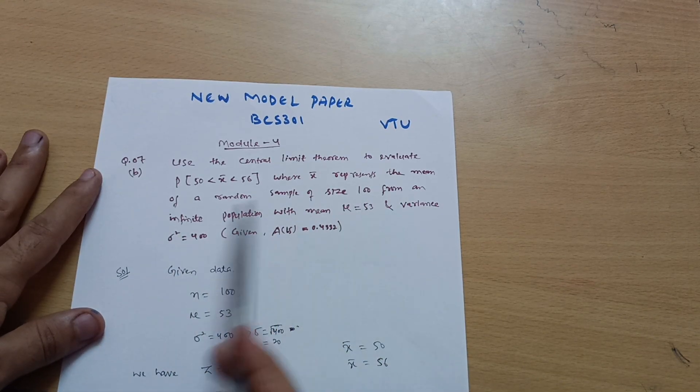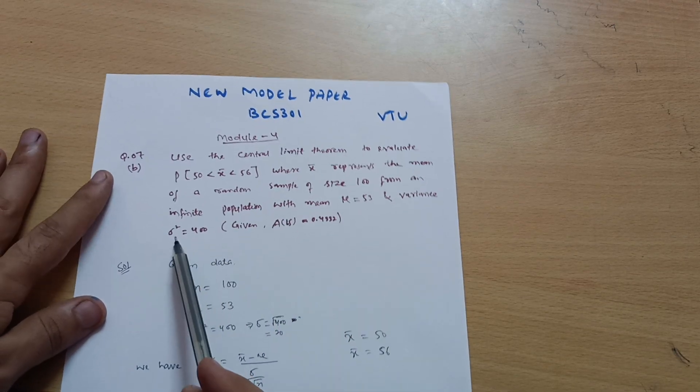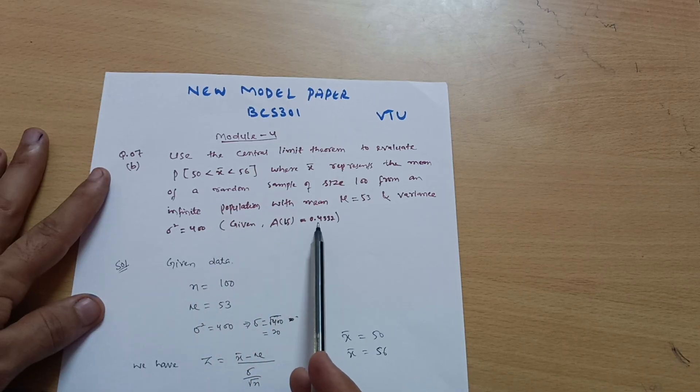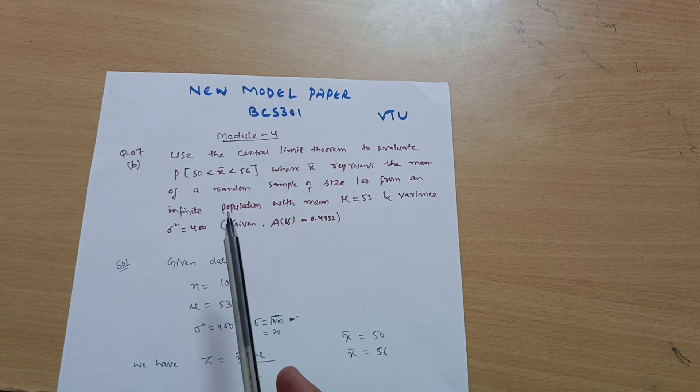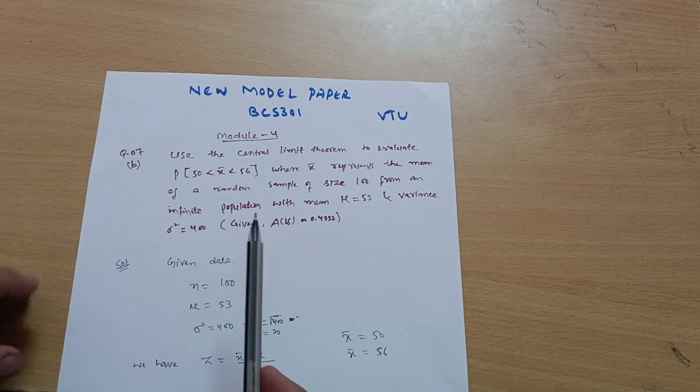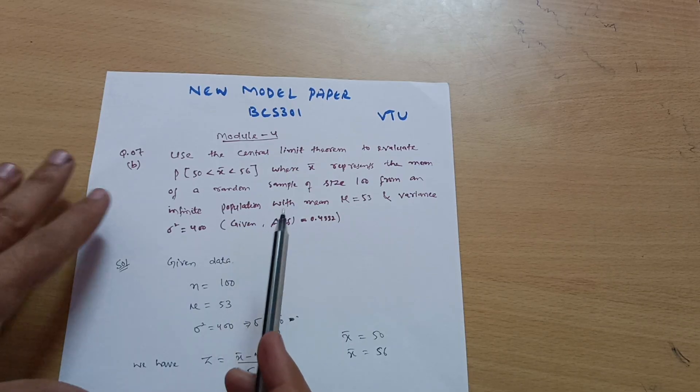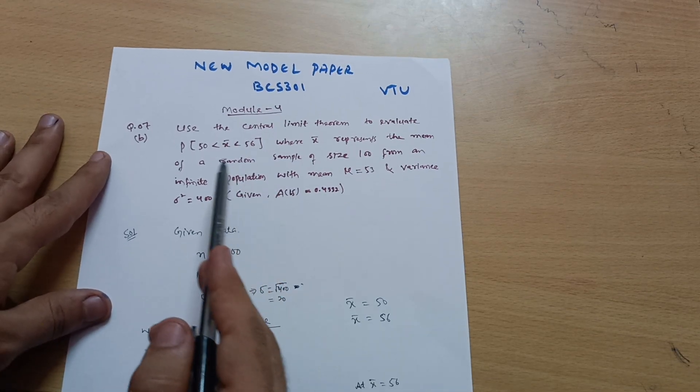The population has mean μ = 53 and variance σ² = 400, and given A(1.5) = 0.4332. As I've told you in previous videos, this module is very easy to tackle. You can easily get 20 marks. This is purely based on formulas. Try to write the given data first in the question.